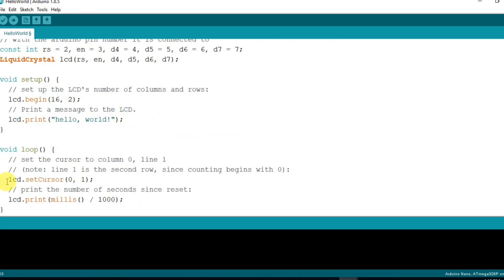Now, inside the void loop function, lcd.setCursor(0,1) sets the cursor to column 0, line 1. That means 0 for the first column and 1 for the second row. Then, lcd.print(millis()/1000) prints the number of seconds since reset.